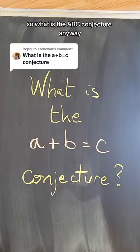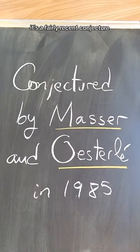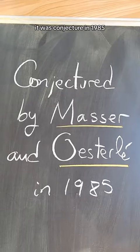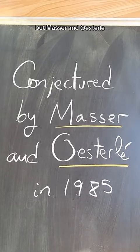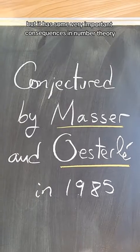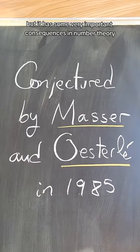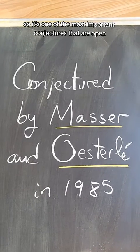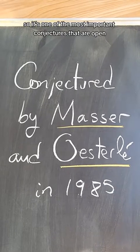So, what is the ABC conjecture, anyway? It's a fairly recent conjecture. It was conjectured in 1985 by Masser and Osterle. But it has some very important consequences in number theory. So it's one of the most important conjectures that are open.